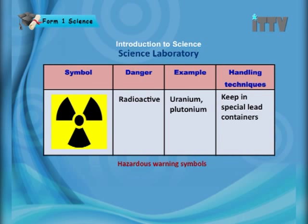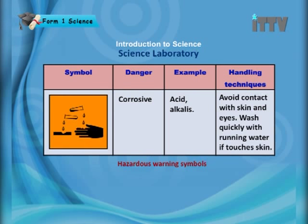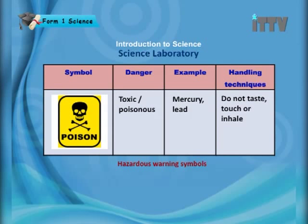The corrosive sign indicates chemicals such as acids and alkalis — for example, hydrosulphuric acid. Avoid contact with skin, and wash quickly with running water if it touches skin. The poisonous or toxic sign indicates substances such as mercury and lead. Never put any chemicals into your mouth while in the science laboratory. Do not taste, touch, or inhale these substances.